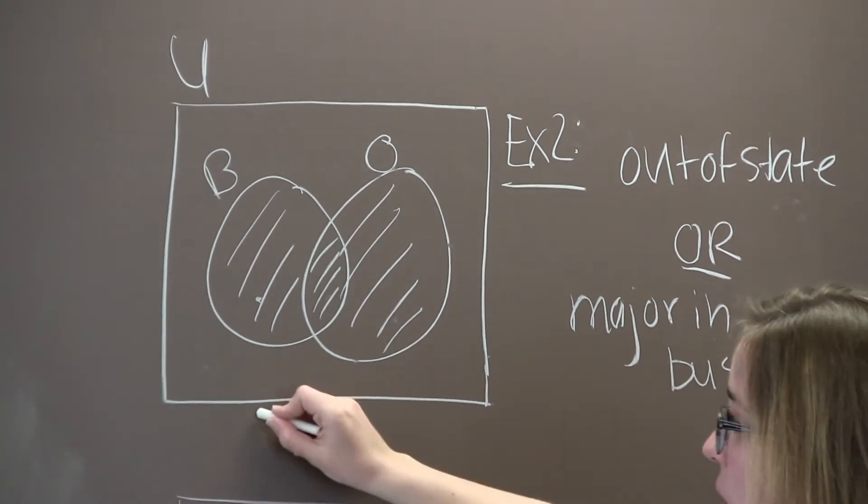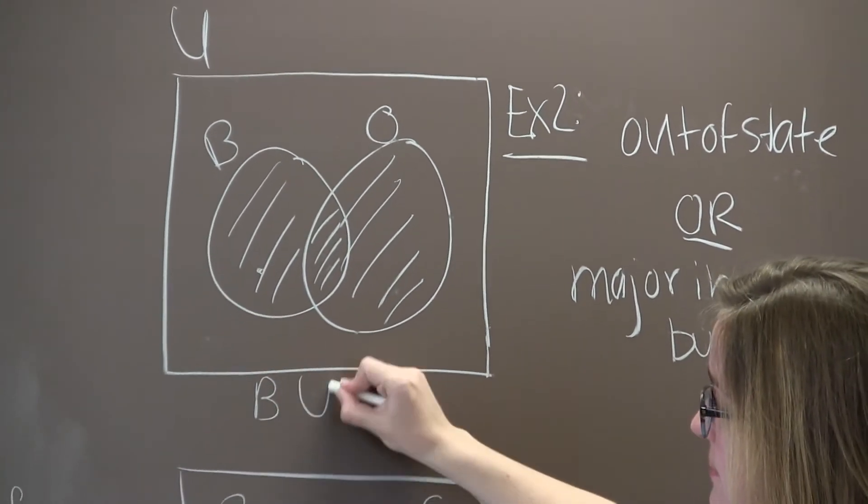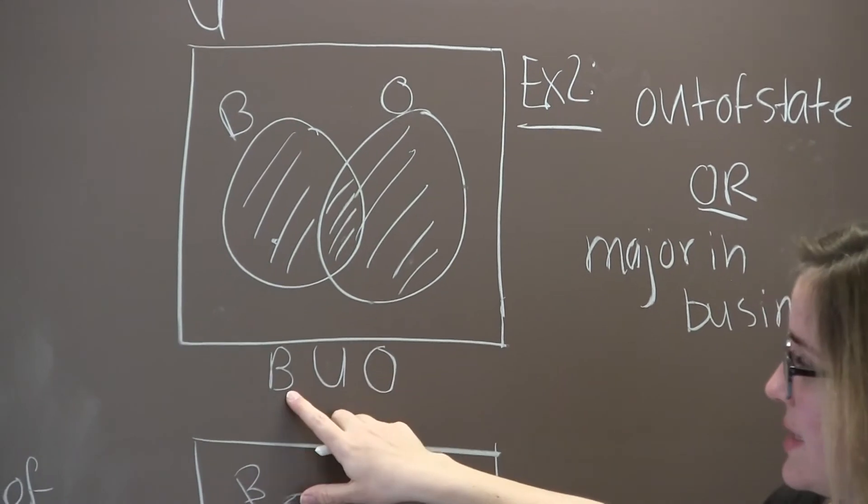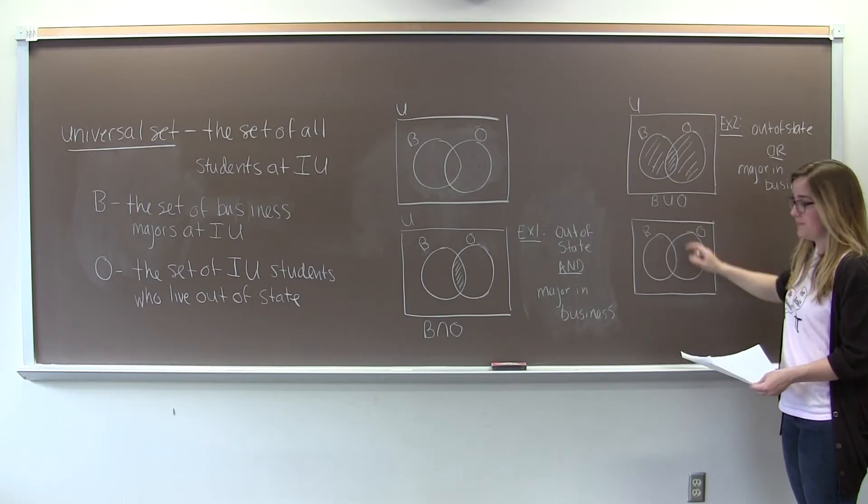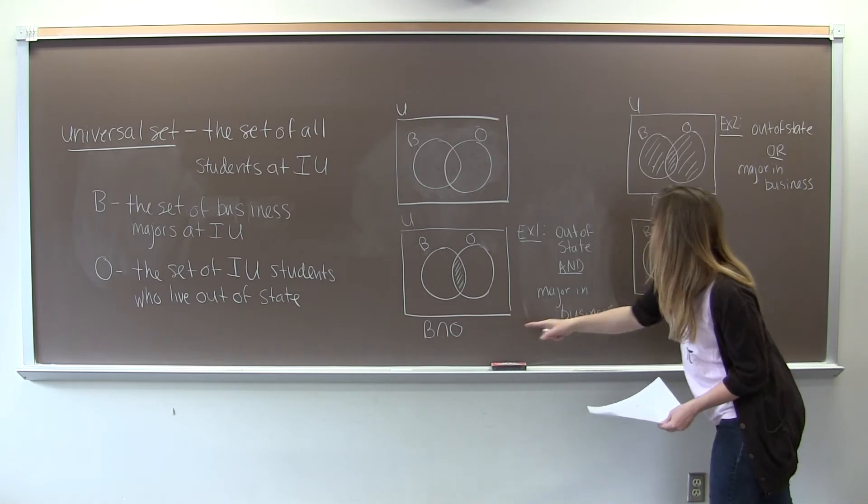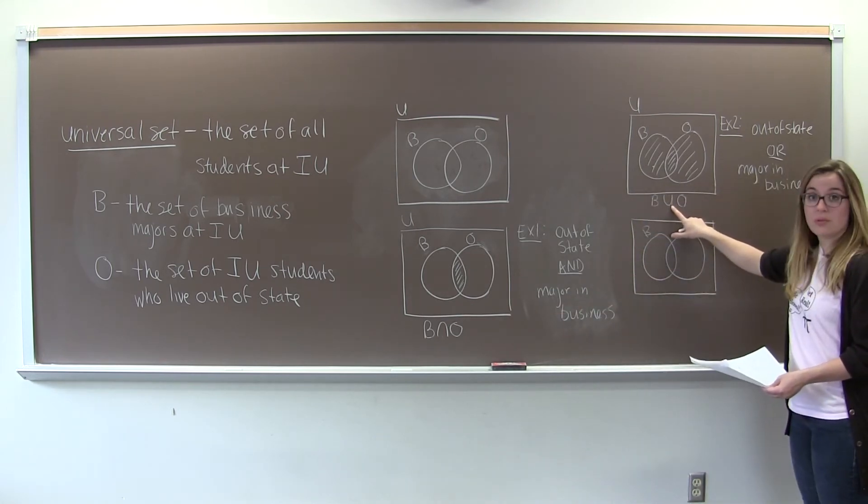Recall from last time we call this the union, so anything that's in the set B or in the set O. Intersection goes with AND. Union goes with OR.